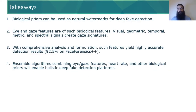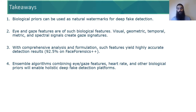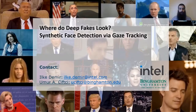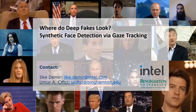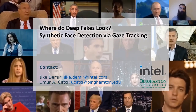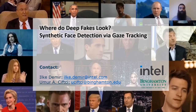To sum up, we demonstrate that humans contain neural watermarks that can be exploited for deepfake detection. Eye and gaze features are such signals, and when carefully formulated, we can achieve high detection accuracies on several datasets. For the future, we would like to see deepfake detection platforms combining multiple biological variables in ensemble algorithms. Thanks for listening — you can direct your questions now, or reach us from the contact information on the screen.